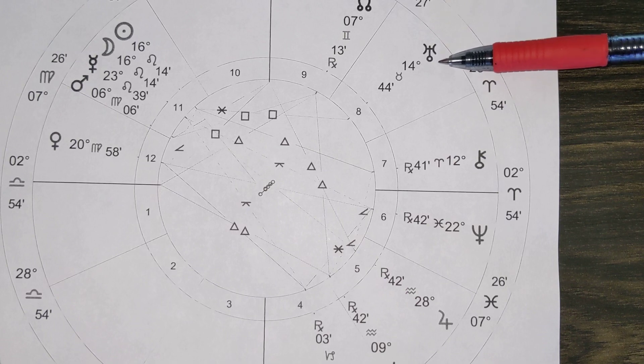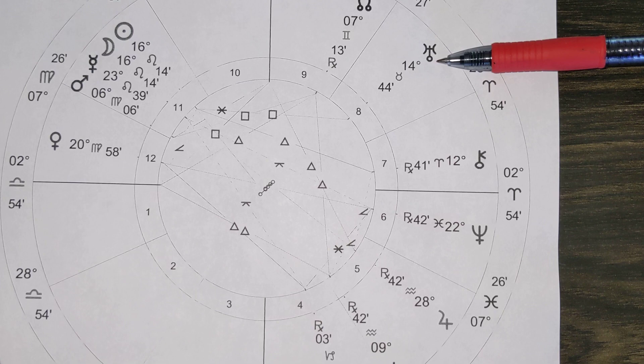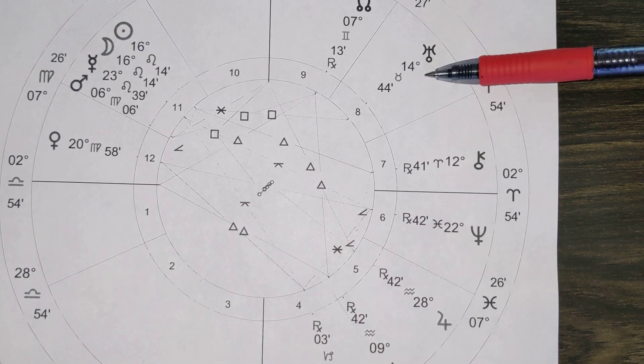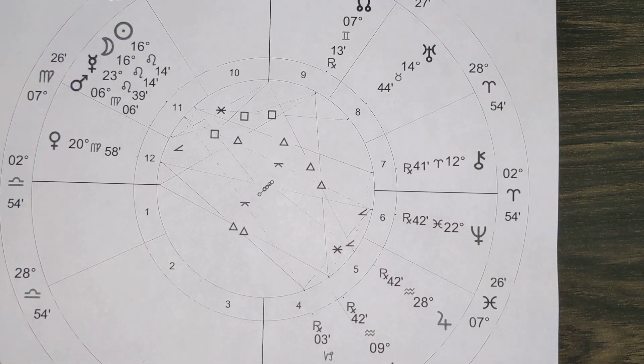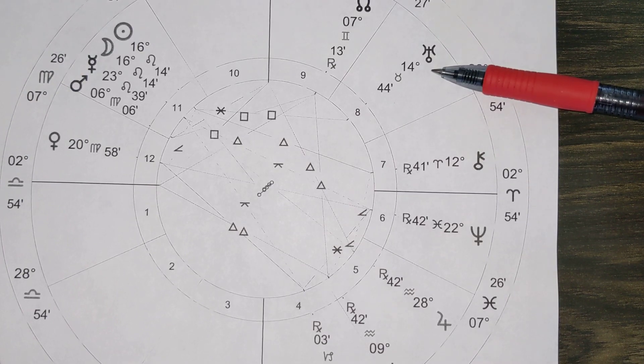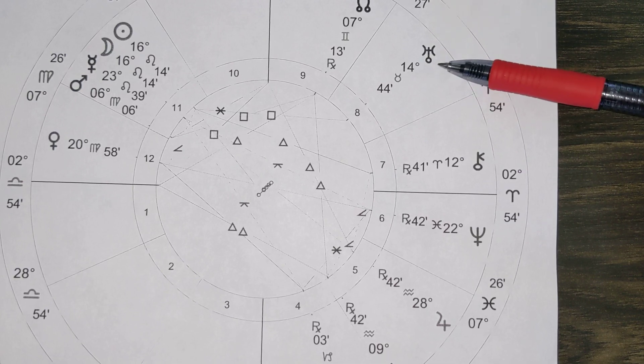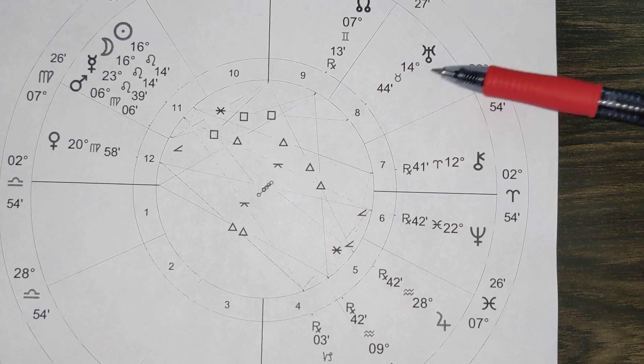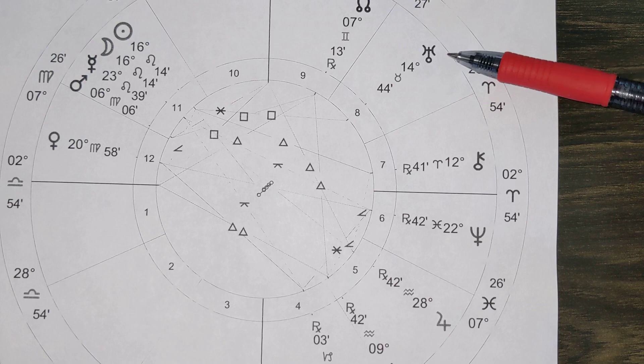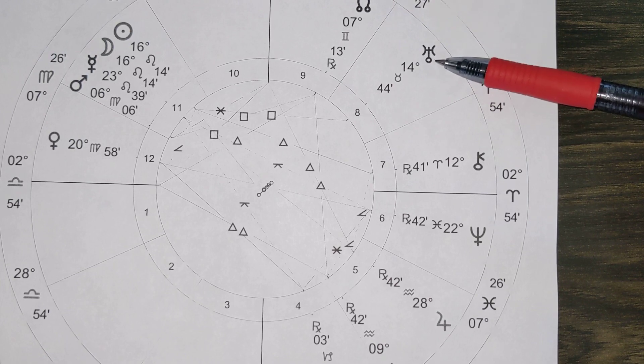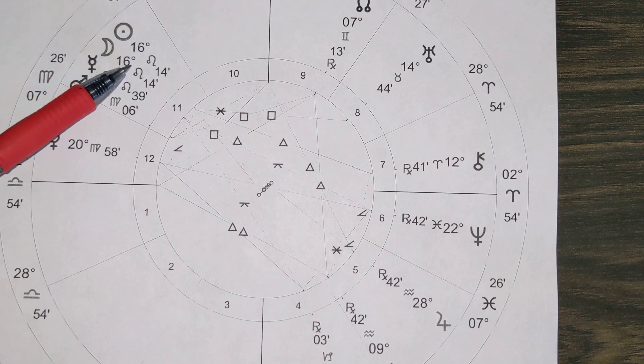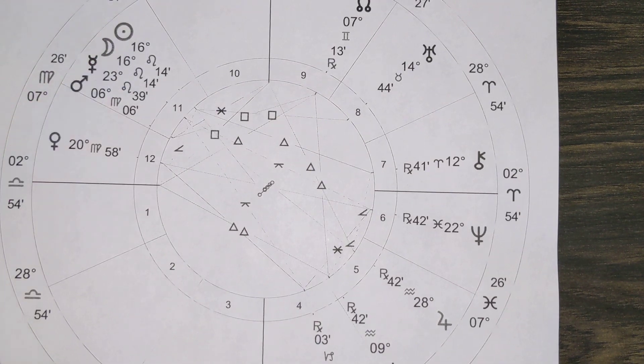And yet this Uranus is going slow as it prepares to station retrograde in August. So the square of this dynamic electrifying energy to the sun and the moon is always an unexpected development. Something surprises us. Maybe it feels like a blind side. Maybe it's an out of the blue. Maybe there's something that's accelerated here and it just has that wow factor. This energy can be chaos. It can be liberation. It can be, I have to trust what's right for me. I can't be held back.